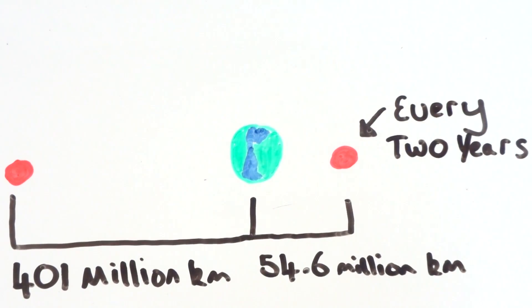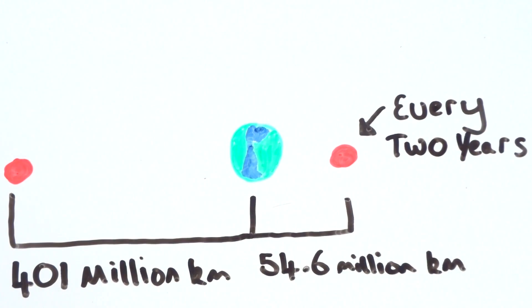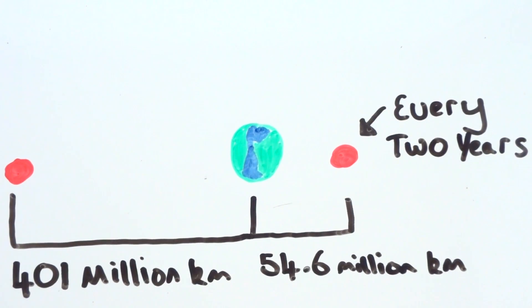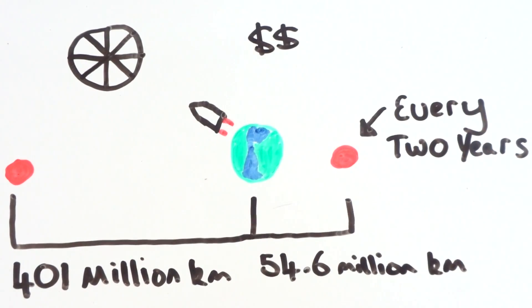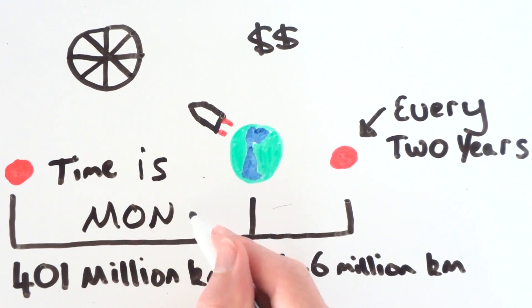Every two years Mars will be at the closest point I mentioned before, which means every two years we have a time slot which is the time we want to be getting to Mars. There's no point flying to Mars if it's all the way over here, it's going to take more time, more resources and a lot more money.